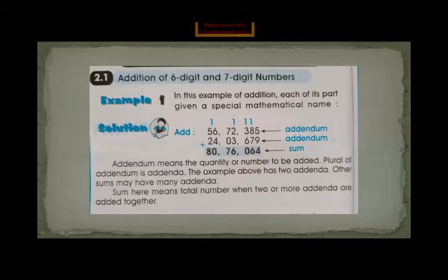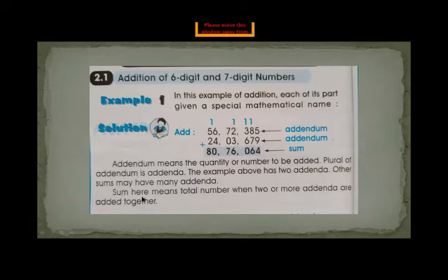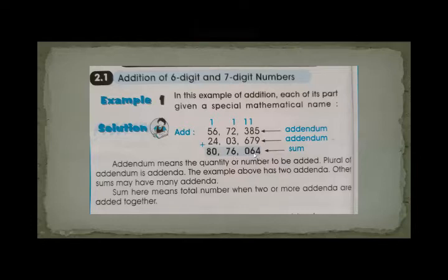Addend means the quantity or number to be added. The plural of addend is addenda. So here, how many addends are given? Two. One addenda is this and another addenda is this. Sum means the total number when two or more addends are added together. This is your sum and these two are the addends.